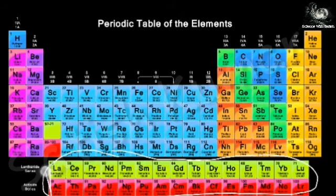Why are the f-block elements placed separately at the bottom? They are placed there to give a proper look to the modern periodic table and not to disturb the remaining elements. These elements range from atomic number 57 to 71 (lanthanides) and so on.